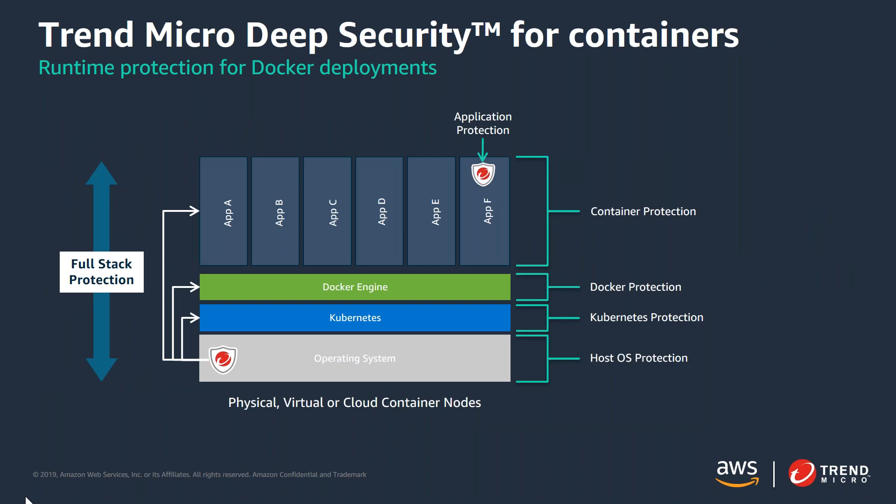Whether you're running EC2 instances for your container platform or using a managed service like EKS, once a container is running in production you still need to apply those same runtime controls. The shared security model changes slightly depending on your container management platform and build automation, but security still plays a key role. These controls may be at runtime but also need to be container-aware — understanding what services and processes are associated with Kubernetes or Docker. As an example, recall the fairly recent vulnerability with runc — these are events and alerts the security team needs to be made aware of.